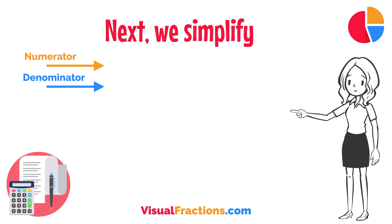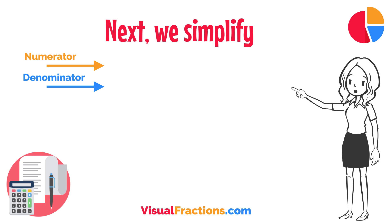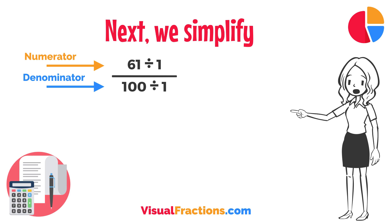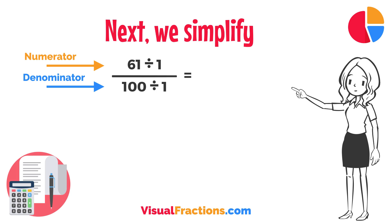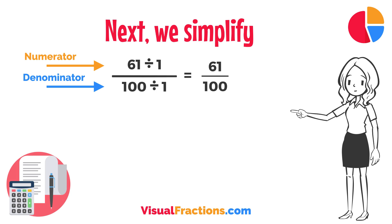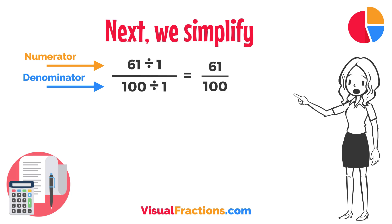Next, we simplify. Both the numerator and the denominator in 61 one-hundredths are divisible by 1, the greatest common divisor. So, 61 one-hundredths is in its simplest form and cannot be further simplified.